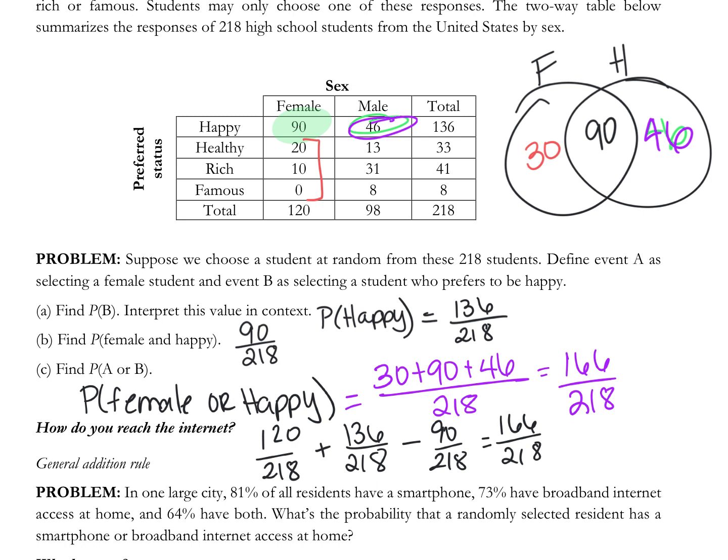Questions on that? That ends up being the probability of female, plus the probability of happy, minus the probability of female and happy. I don't like how they just use A and B. On probability, we almost never just use A and B. We're going to use letters that make sense to us to help us figure out what we're trying to find.